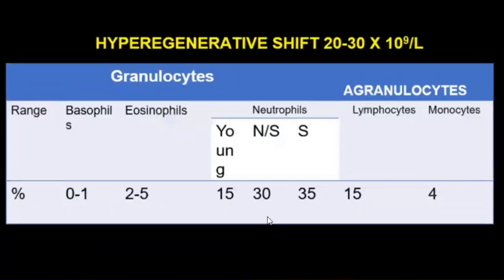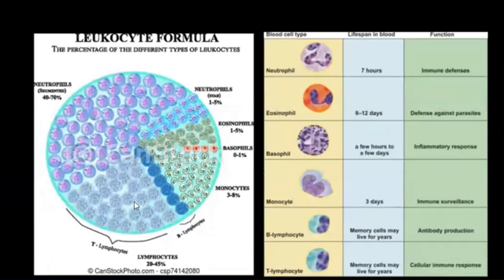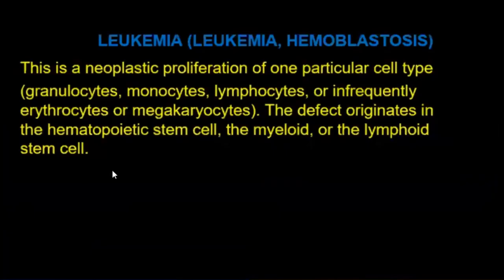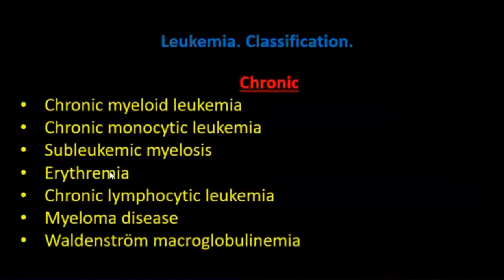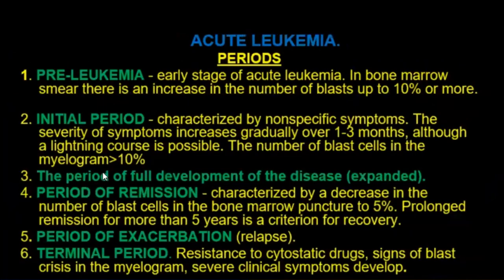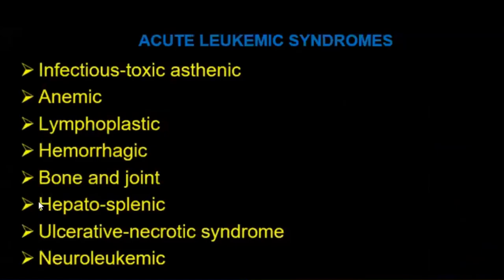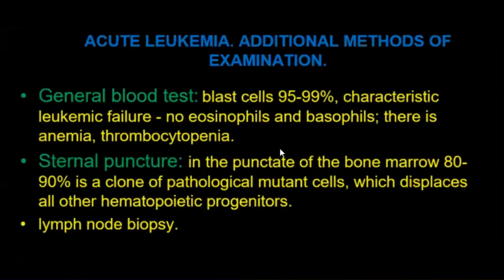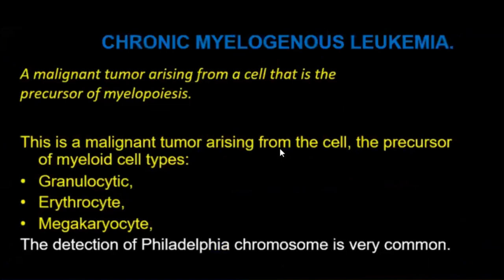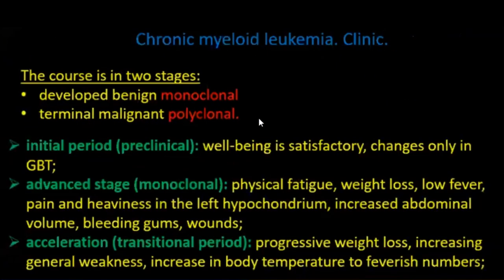Types of blood cells: granulocytes and agranulocytes. Regulation of leukopoiesis is a very important topic. Leukemia etiology classification includes acute and chronic forms. Some periods: pre-leukemia, latent period, and clinical syndromes. Hematological syndrome scheme of hematopoiesis. General blood test for diagnostic, sternal puncture, and myelogram are important diagnostic tools. Chronic myelogenous leukemia and chronic leukemia are very significant and complex disorders.